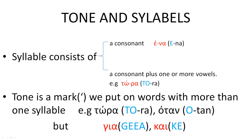The second case is when a syllable consists of a consonant and one or more vowels. So for example, in the word tora, which means now, taf and omicron, or ro and alpha, are syllables.